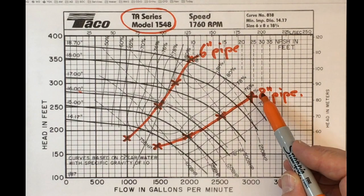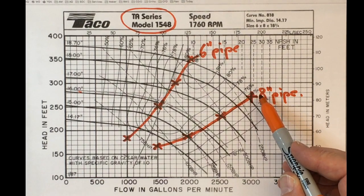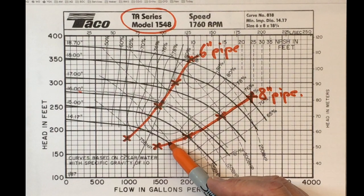So I like the 8-inch pipe solution, and that tells me I could probably move down to the smallest impeller size and still get fairly good performance.